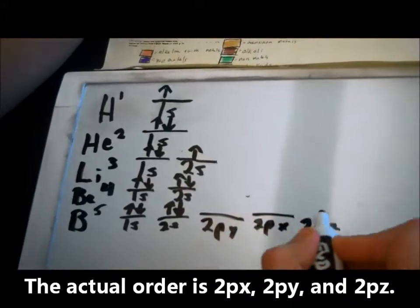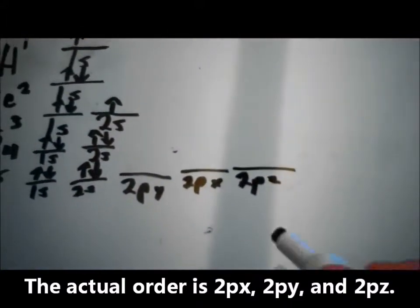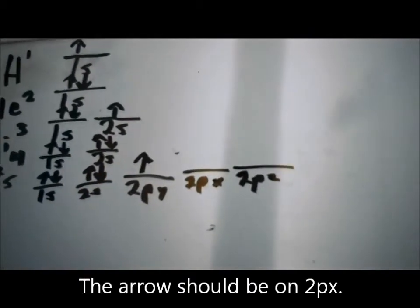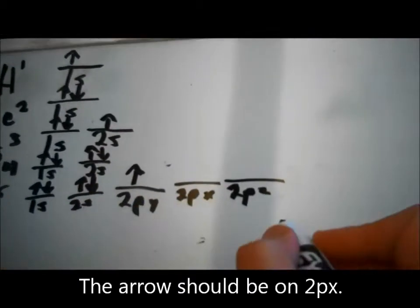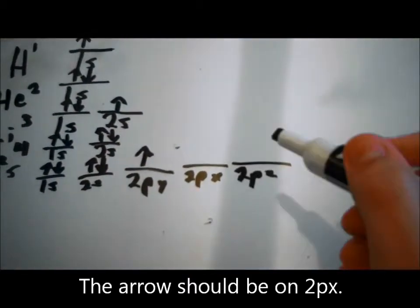Now, why did I do that? I did that because the p subshell can hold 6 electrons. But here, we only need 1. Now, if you needed to fill the rest of these up, you would do 1 for each until you had to double up. And that's how you do it.